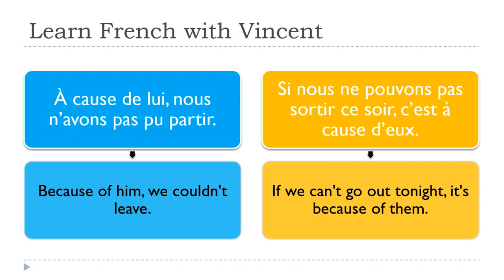I wanted to show you that you can start the sentence with « à cause de lui », or you can end with it: « c'est à cause de... ». So it's quite flexible. Remember to structure the sentence according to the position of « à cause de ». But in these situations, remember that they are connected with pronouns — « à cause de lui », « à cause de eux ».